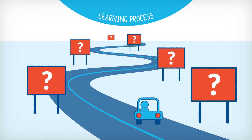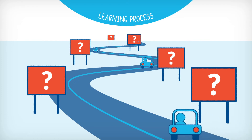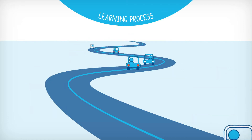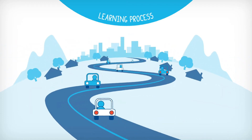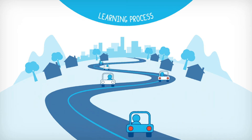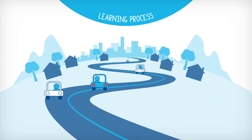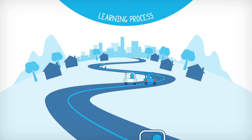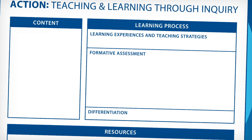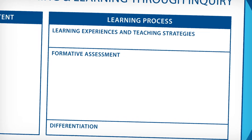Remember that in the MYP, learning is a dynamic process, with action and student agency as driving forces. Action involves learning by doing, through practical, real-world experiences, and these types of learning opportunities should be clearly evident in the unit plan. Throughout the learning process, students need multiple opportunities to demonstrate their learning, and to self-assess and receive feedback on their progress.